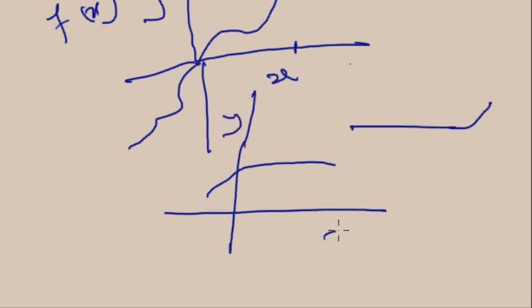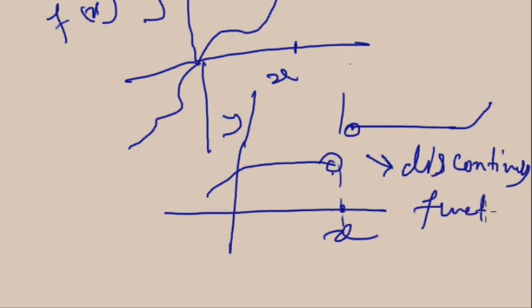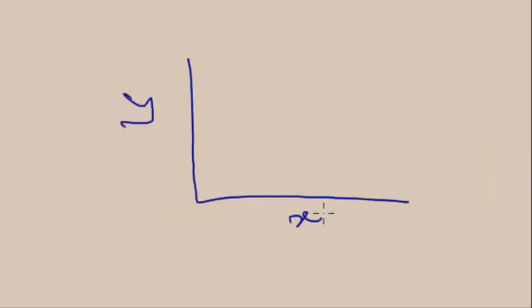Suppose at some point x₁ on the graph, for values just below x₁ you have one value of Y, and for values just above x₁ you have a different value of Y. This type of function is called a discontinuous function, because the function becomes discontinuous at some value of X.